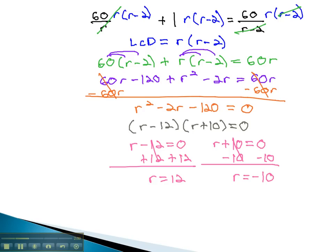As you remember, this rate is how fast the man rode his bike to the park. We couldn't ride at a negative rate, and so we can cross off the negative 10. The only rate that makes sense is he rode at 12 miles per hour.